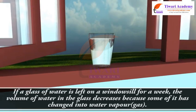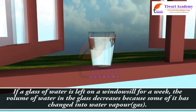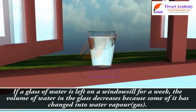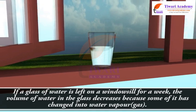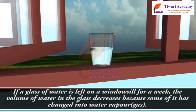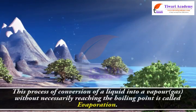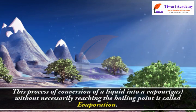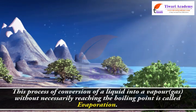If a glass of water is left on a windowsill for a week, the volume of water in the glass decreases because some of it has changed into water vapor gas. This process of conversion of a liquid into a vapor gas without necessarily reaching the boiling point is called evaporation.